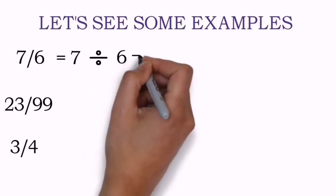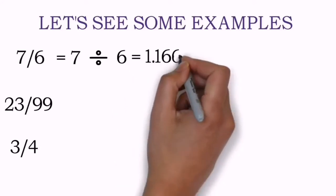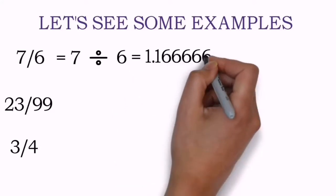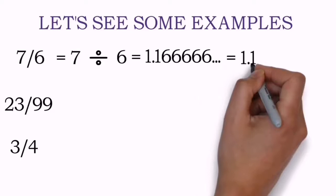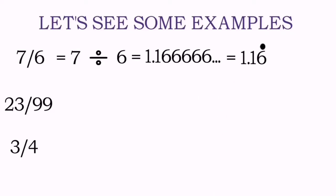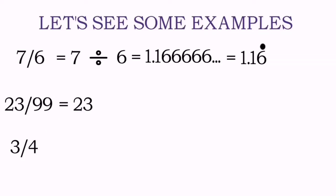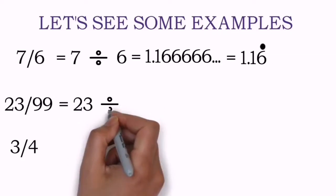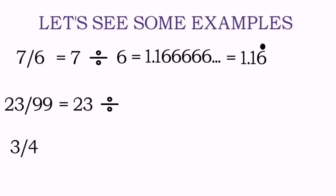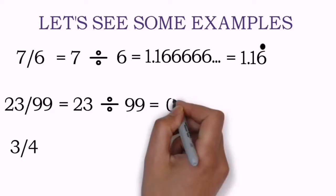7 upon 6 is nothing but 7 divided by 6. When you complete the division, you will find that your division is never ending because the digit 6 keeps on repeating itself again and again. So instead of writing all those 6s, we just give one dot over the head of that one digit, 6, as shown.